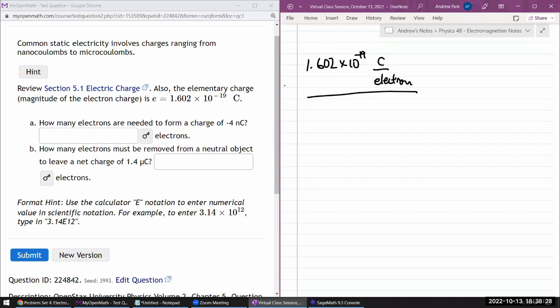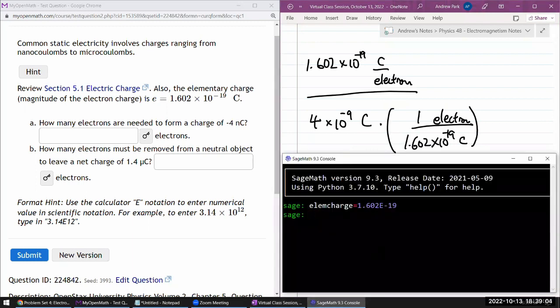They've given us a quantity in the unit of nanocoulombs: 4 times 10 to the minus 9 nanocoulombs. They're asking us to do unit conversion into electrons. We can multiply by this in the right combination to cancel out the coulomb and get electron on the numerator. That would be 1 electron divided by 1.602 times 10 to the minus 19 coulomb. Hopefully this makes sense. I'm just going to plug in the numbers: 4 times 10 to the power of minus 9 divided by elementary charge.